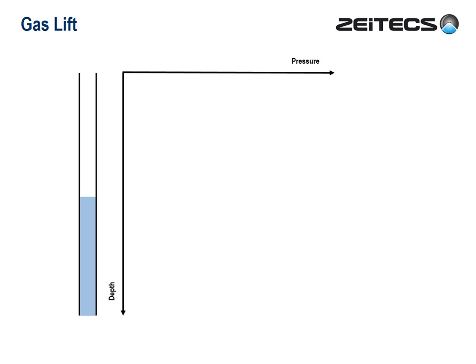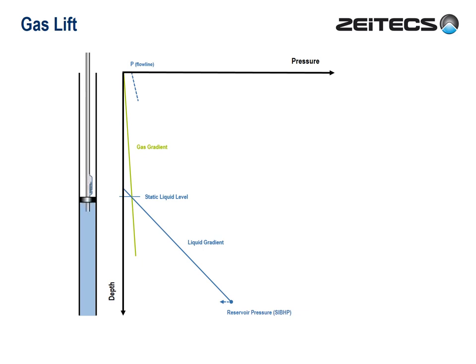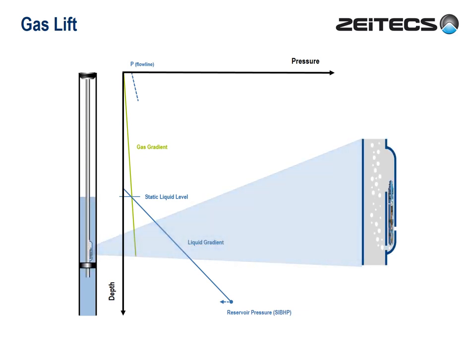Now let's move on to gas lift. We start off the same — we must somehow draw down the reservoir and match the flowline pressure. But now we adopt a different approach. We install a valve in the completion string which allows us to inject gas from the annulus into the tubing. The valve sits at this depth.